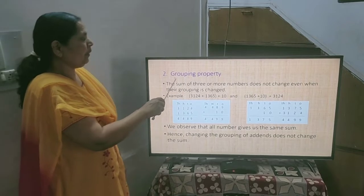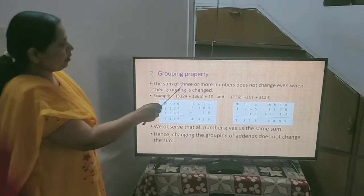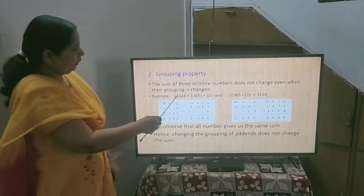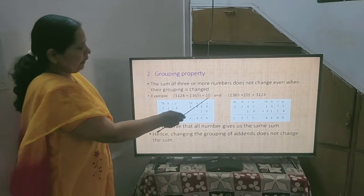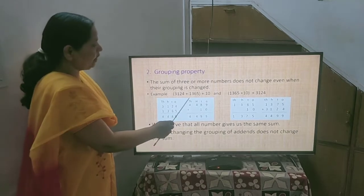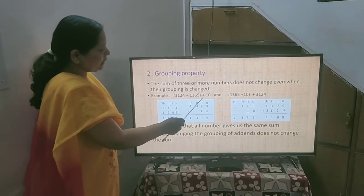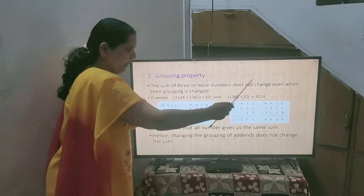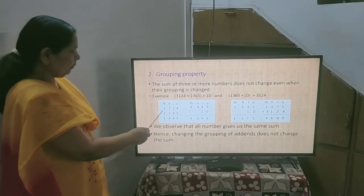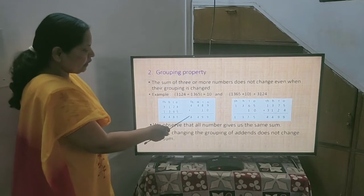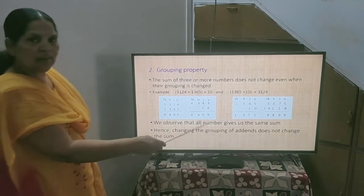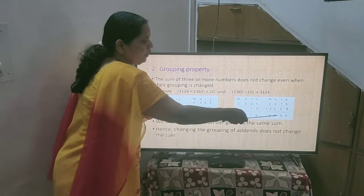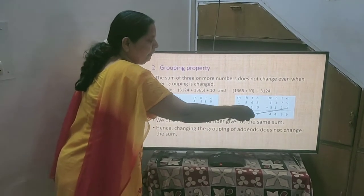Now 2nd property is grouping property. The sum of 3 or more numbers does not change even when their grouping is changed. Here we have written these numbers and in the 2nd place we have changed their groups. 1,365 plus 10 we have taken and then 3,124 is added to it. Here we will see the final answer is 4,499. After regrouping them, the answer is again same, 4,499.